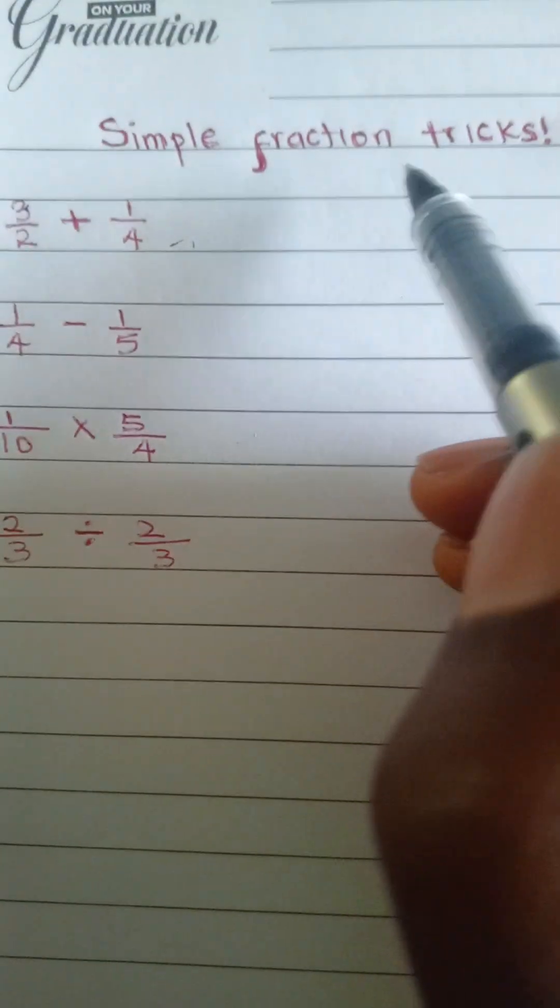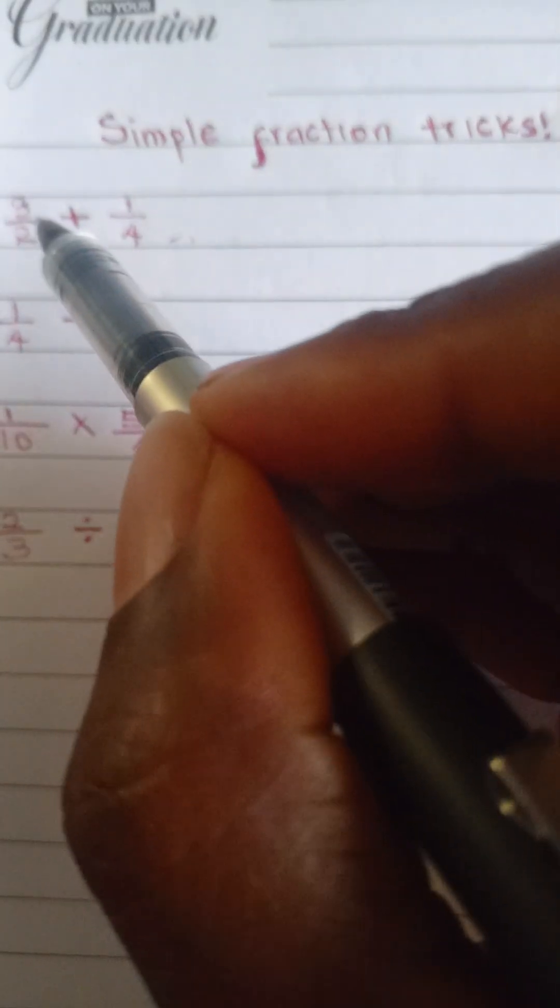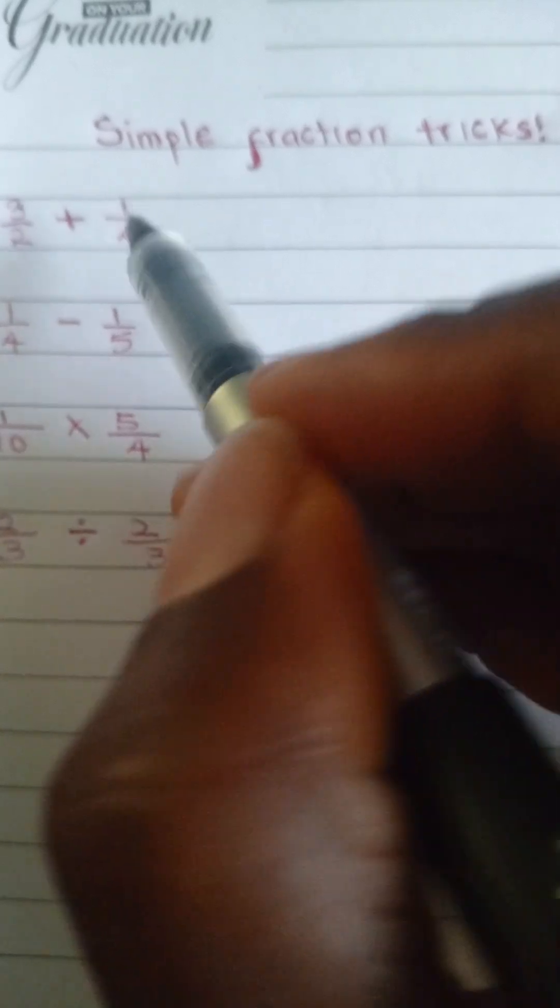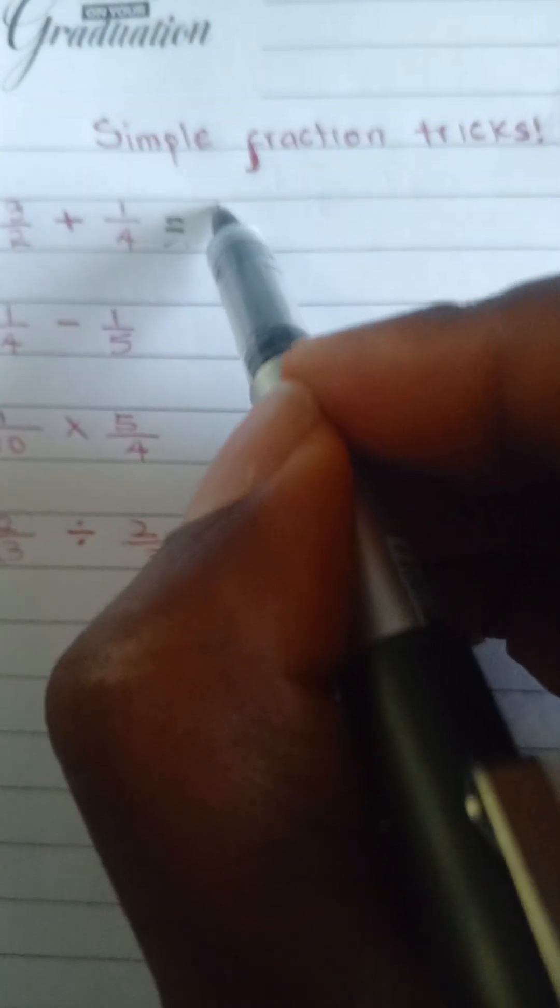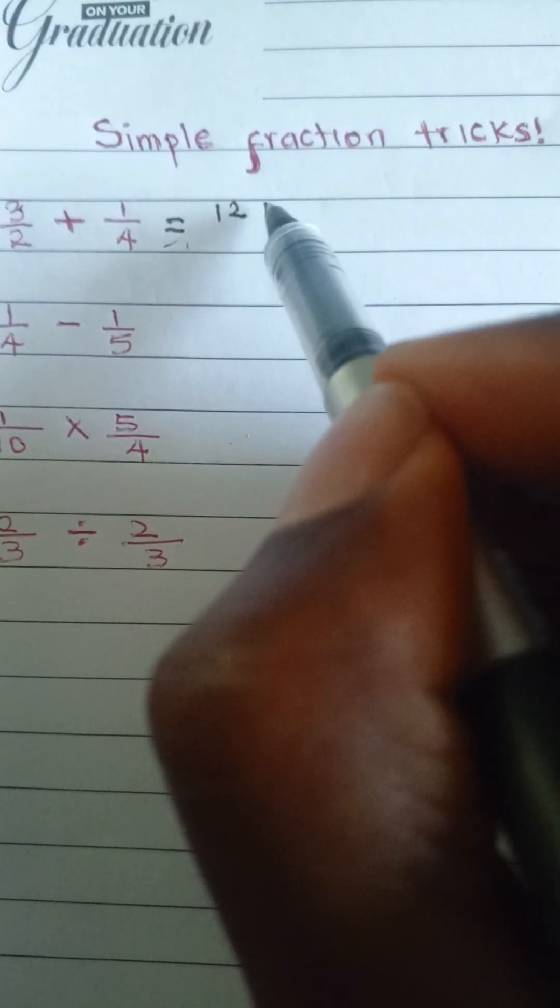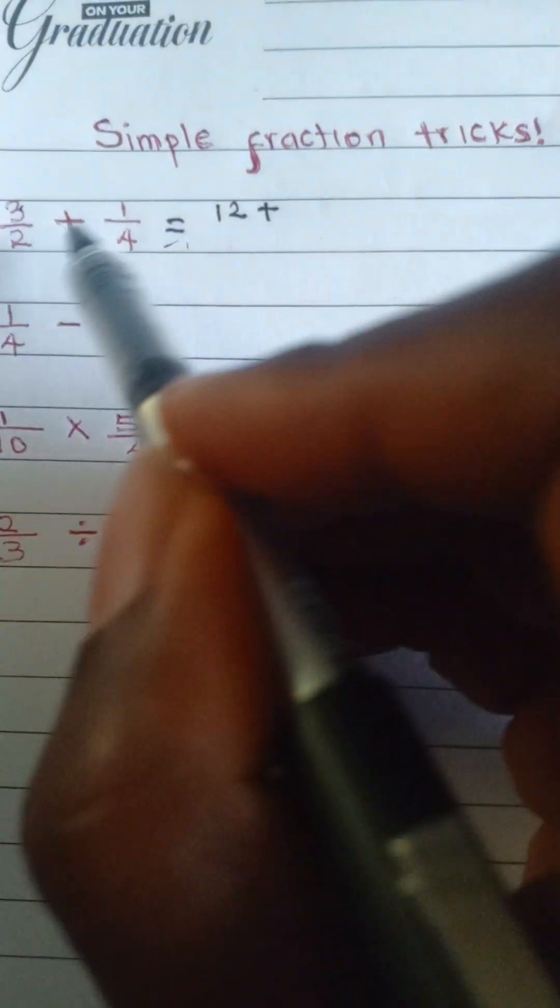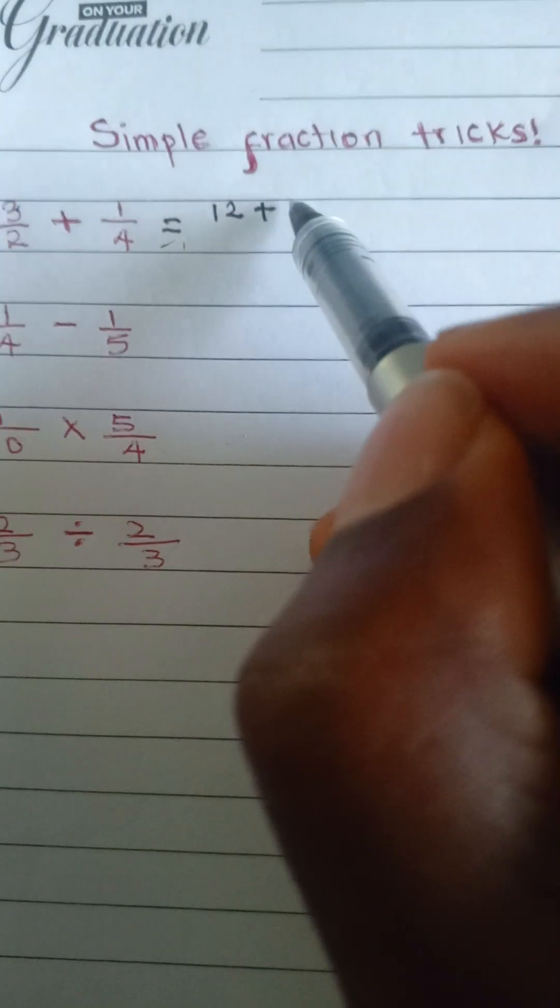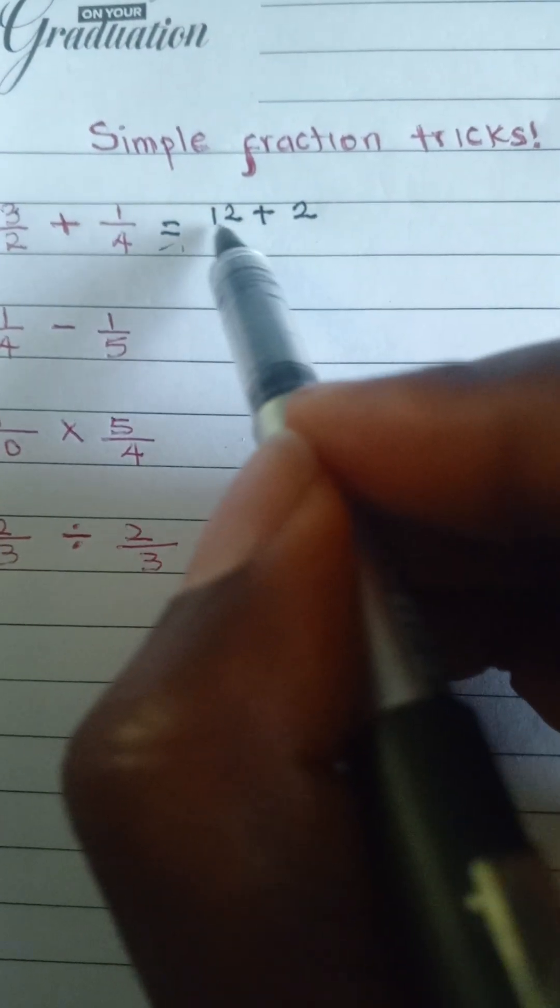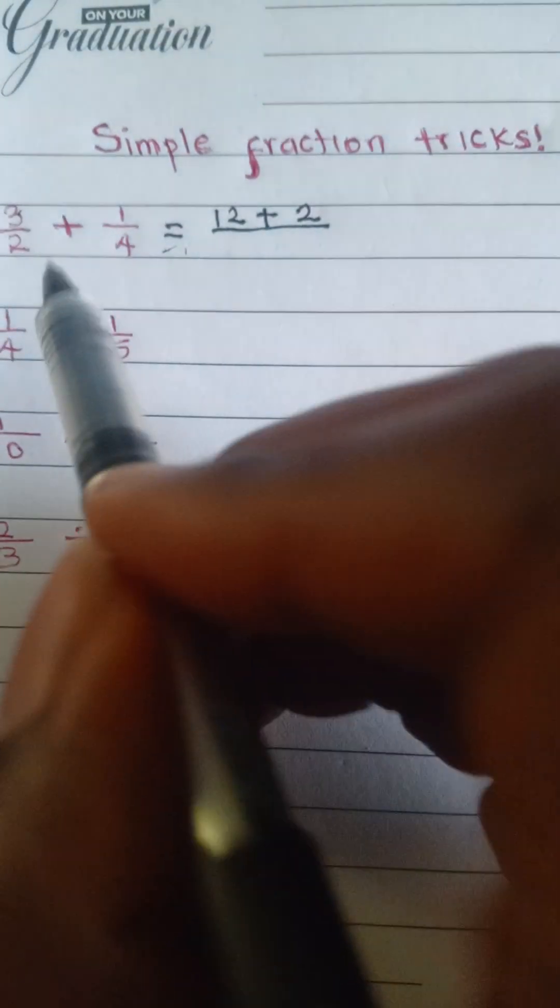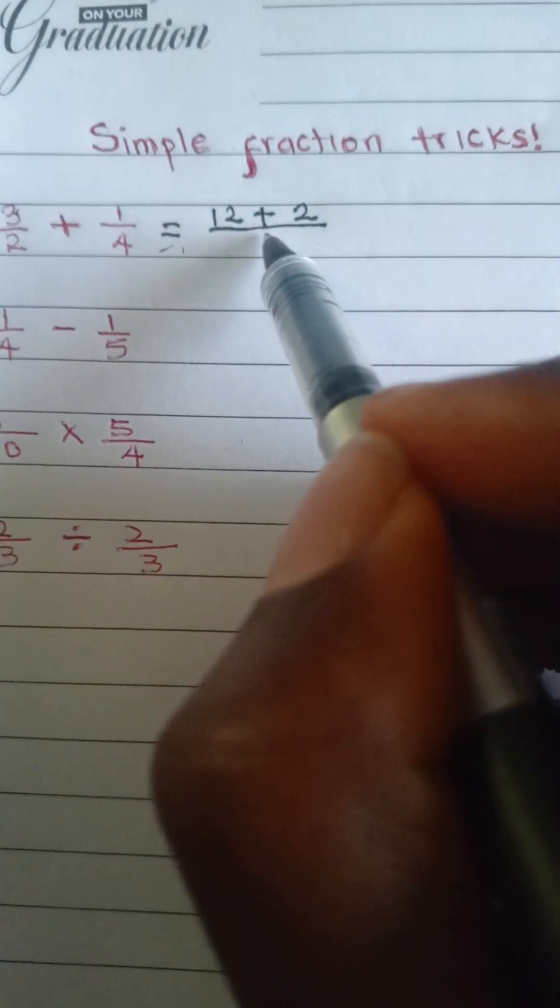Simple fraction tricks. 3 times 4 is equal to 12, plus 2 times 1 is 2, all over 2 times 4 is 8.